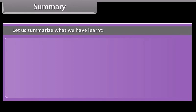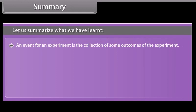Let us summarize what we have learned. An event for an experiment is the collection of some outcomes of the experiment.